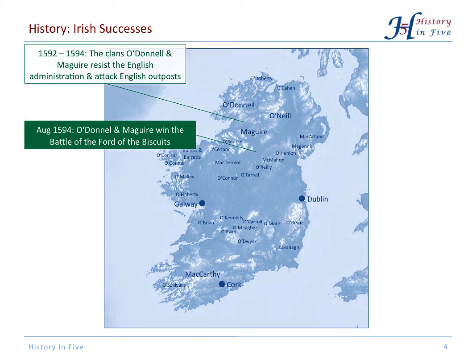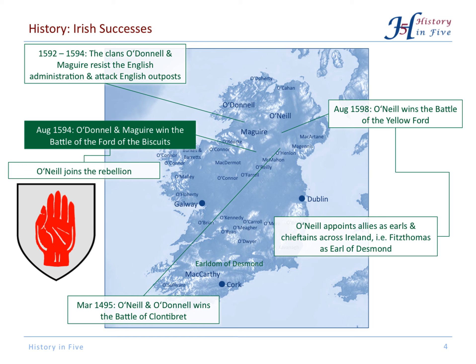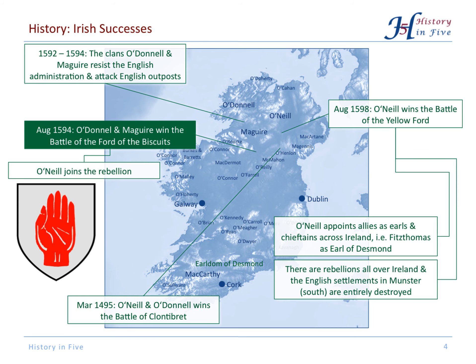O'Neill sensed an opportunity and joined the rebellion. He won two more battles and had more or less gained control over Ireland. He appointed allies and followers as earls and chieftains all across the island, with Fitzthomas and the Earl of Desmond among the most important ones. There were uprisings and rebellions all over Ireland, and in Munster the entire English settlement was destroyed.